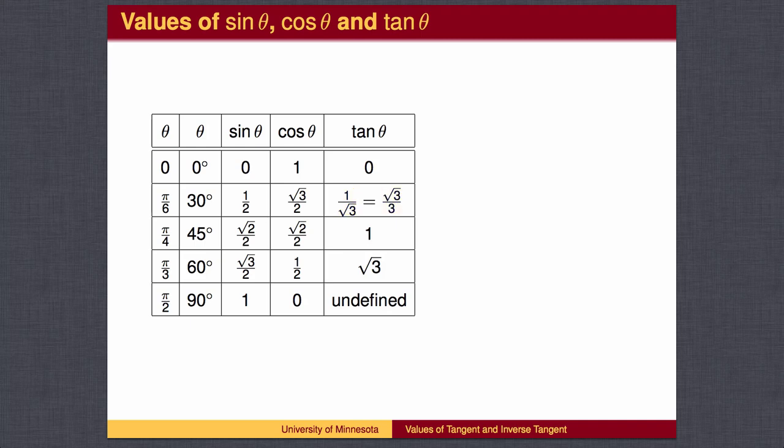The tangent of pi over four is one. The tangent of pi over three is the square root of three. The tangent of pi over two is one divided by zero, which is undefined.